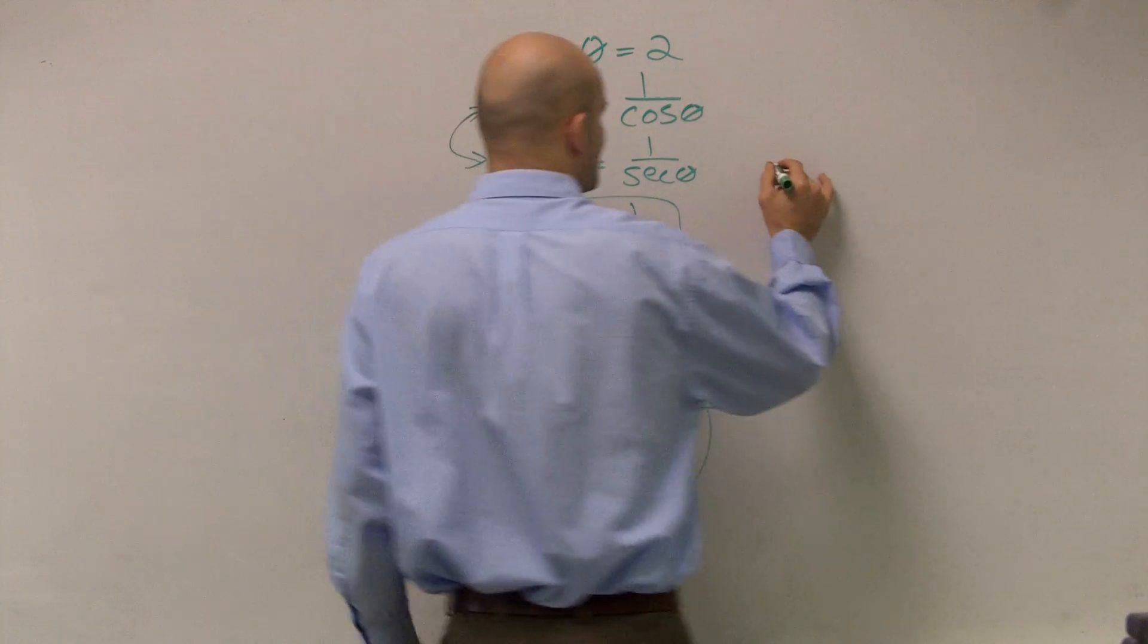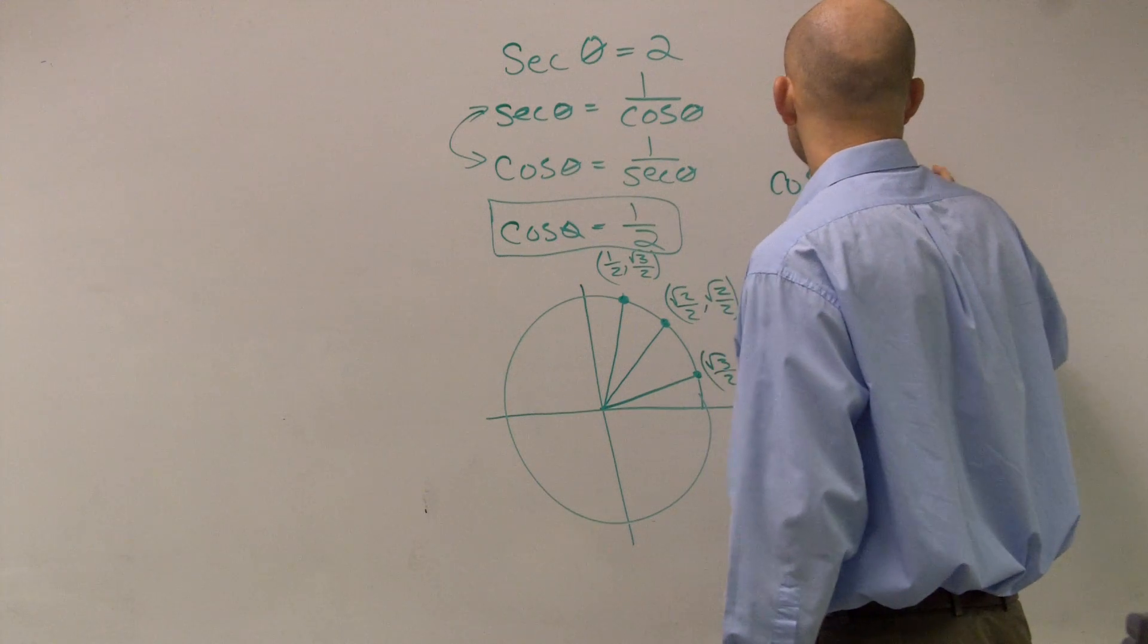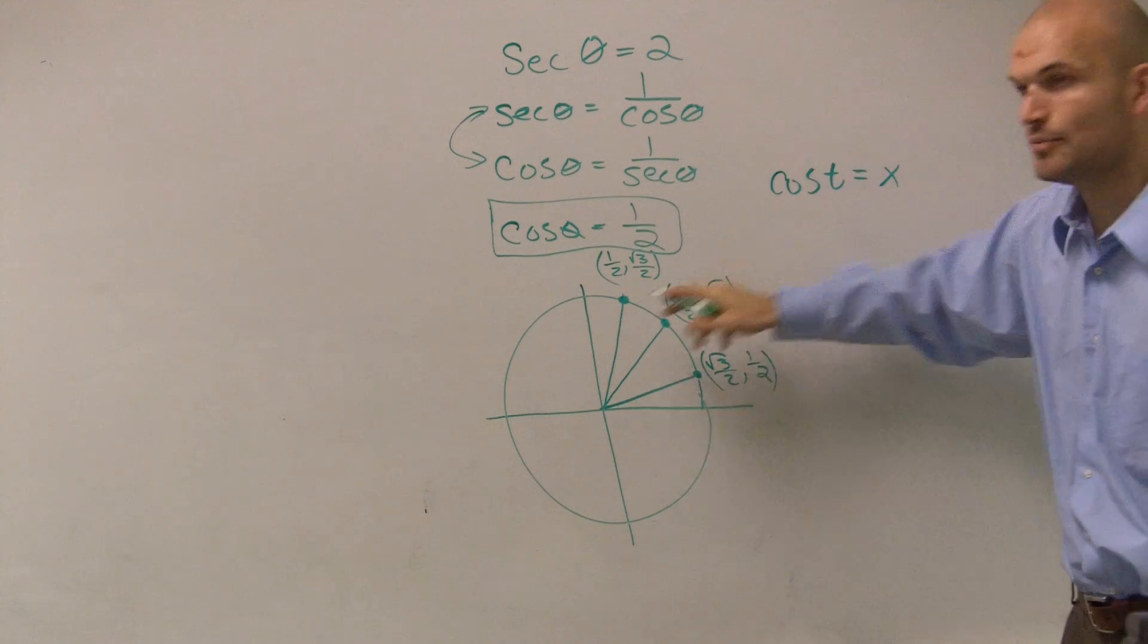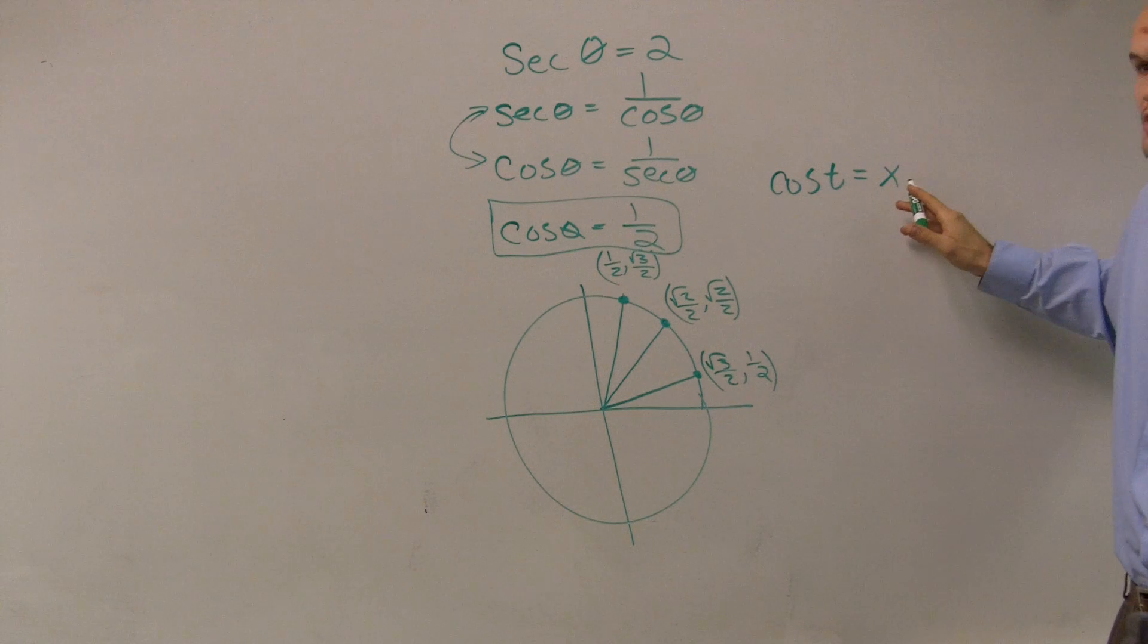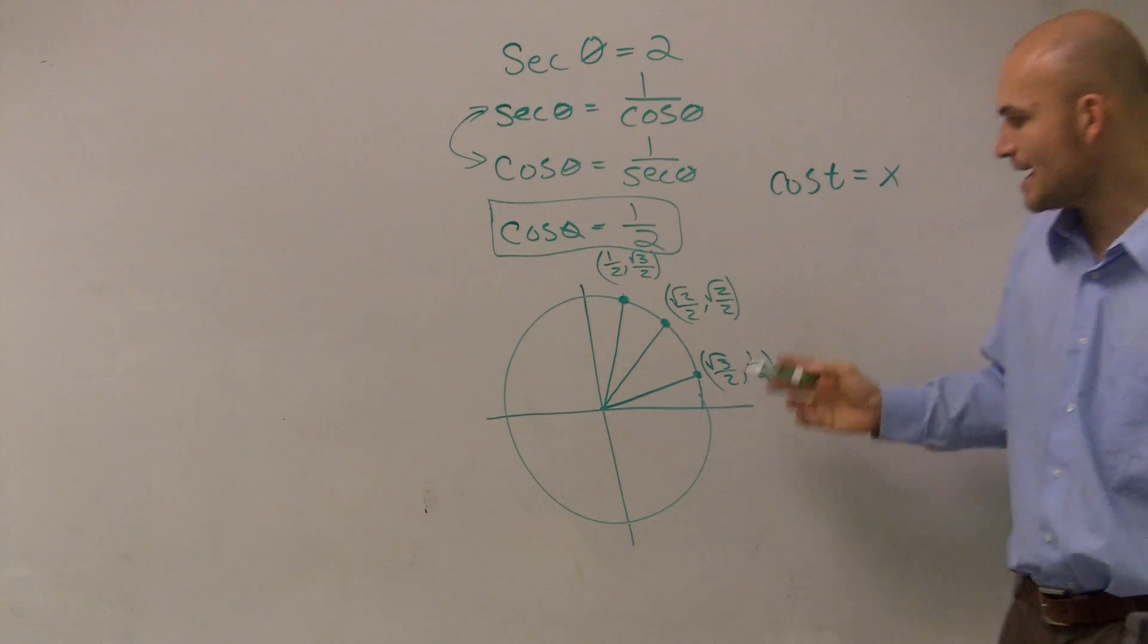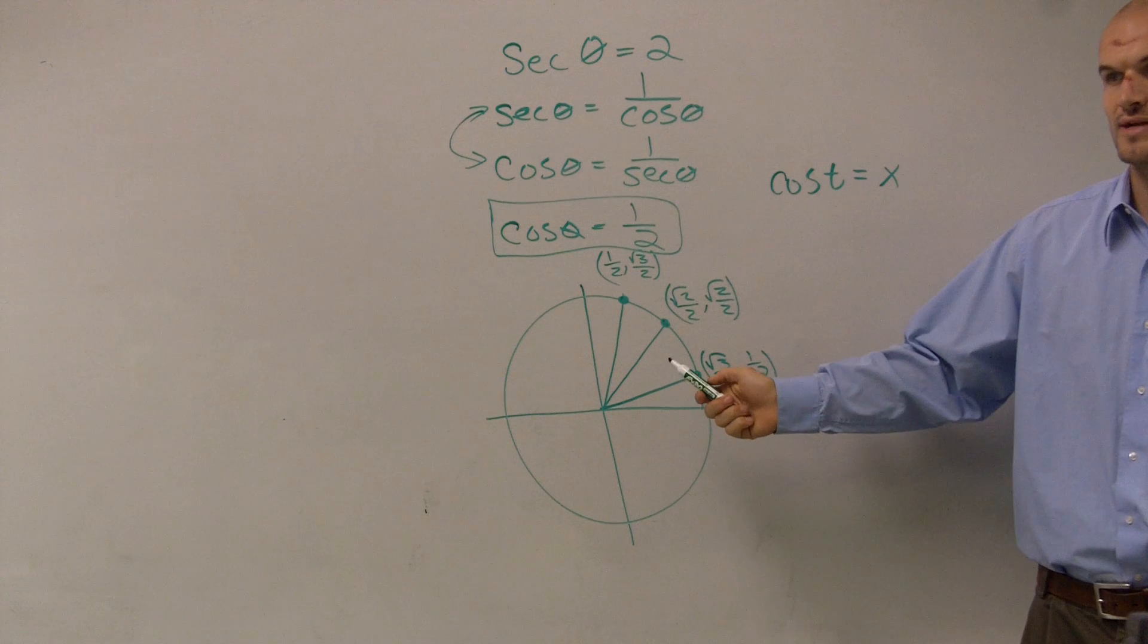Now remember, cosine of any point t, remember t is any point on the unit circle, cosine of any point t is equal to your x coordinate. So where is my x coordinate equal to 1/2?